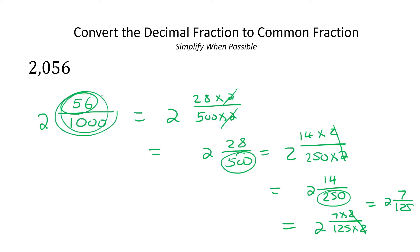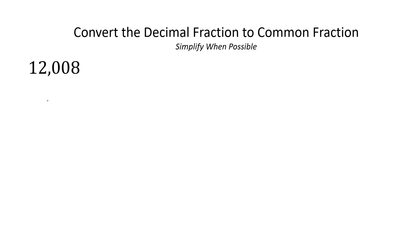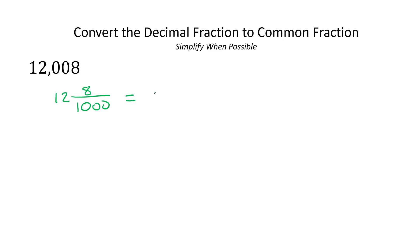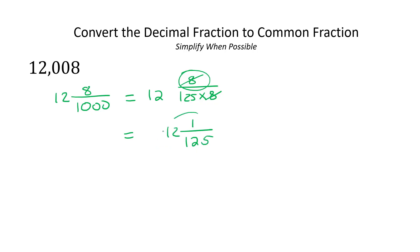You might have been able to simplify this a lot faster — it all comes down to whether you can think of a big enough number that can go into both. So here's the next one: ignore that number, write it over there. There's one, two, three decimals, so that'll be a thousand. We learnt in a previous lesson that eight can go into 1000 one hundred and twenty-five times. So we leave it as eight over 1000, and the eights cancel. When you've got nothing at the top, just put a one there, and then that is your final answer with the twelve in the front.